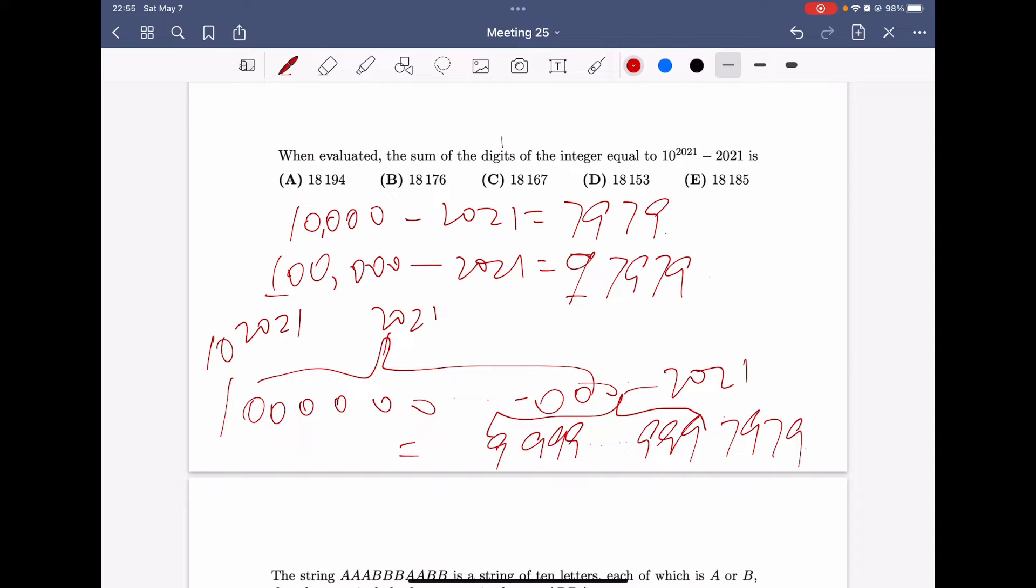And how many 9s are there? There should be 2017 nines. And why is that? Because this number has 2022 digits, and if minus a number, 0 will be less a digit. Therefore, the whole thing would be 2021 digits. And here, there are 4 digits here. So, there will be 2017 nines in front of 7979.